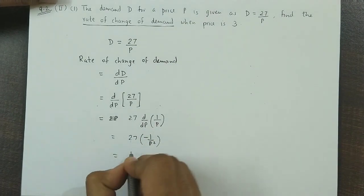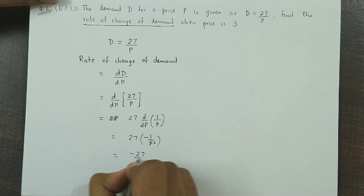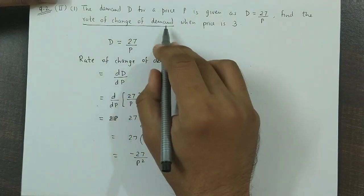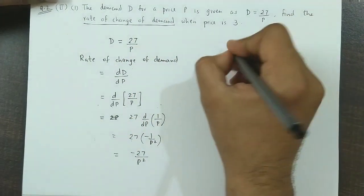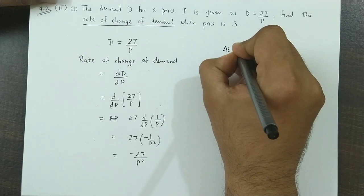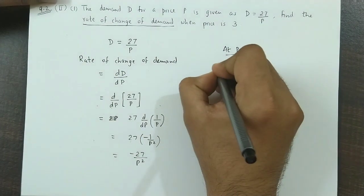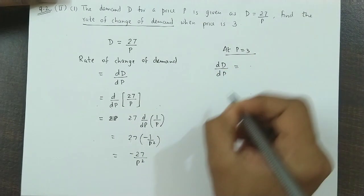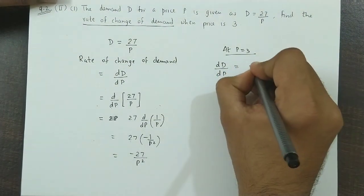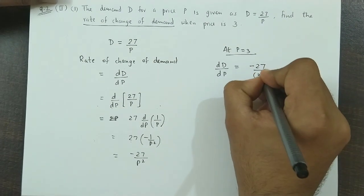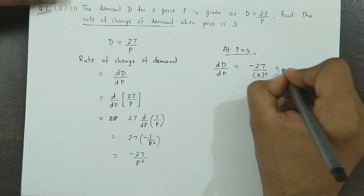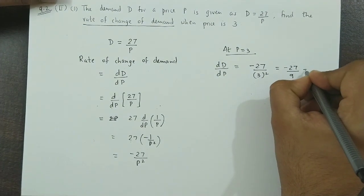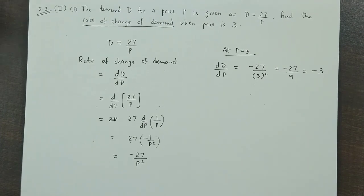So, this value comes to minus 27 upon P square. But, we have been asked for the rate of change of demand when price is 3. So, at price equal to 3, the rate of change of demand will be — we substitute 3. So, minus 27 upon 3 square, which is minus 27 upon 9, which is equal to minus 3.